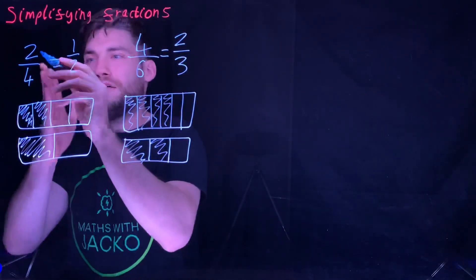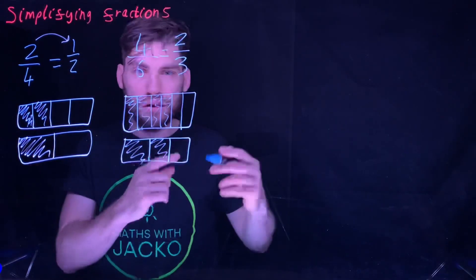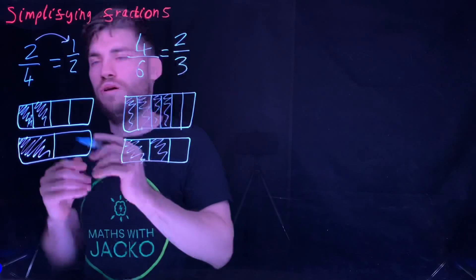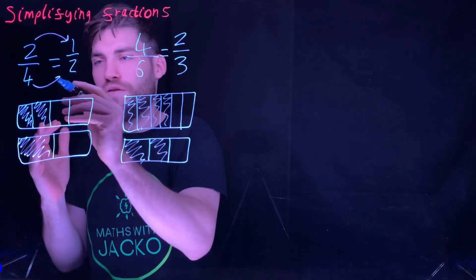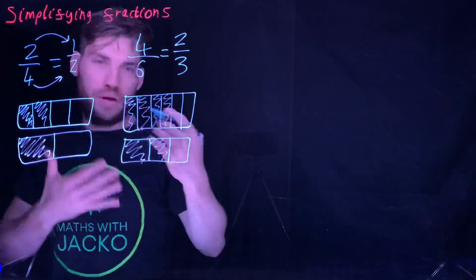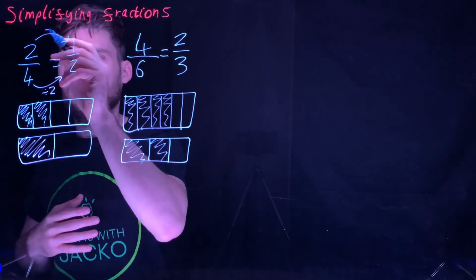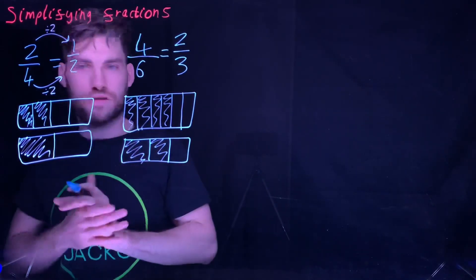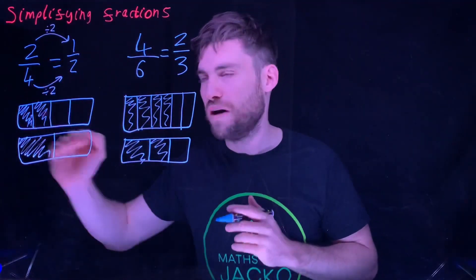Another way, if you didn't have this bar, think what factor goes into two and into four. We're not using one, because then you won't simplify the fraction. Bigger than one. And the answer on this one is two. So you can do dividing both the top number and the bottom number by two. Two divided by two is one, four divided by two is two.